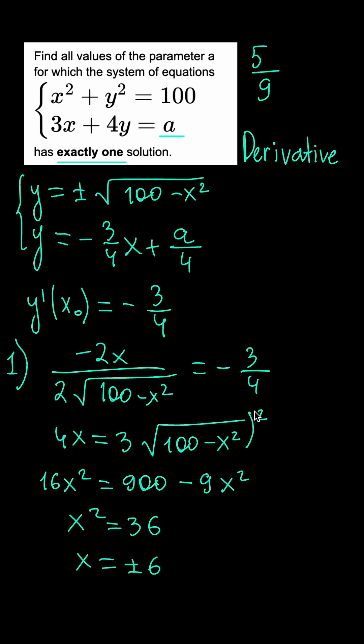But remember that we had 4x equals 3 squared roots, which means that minus 6 cannot be the root of this equation because the left hand side would be negative and the right hand side is always positive. So we have x equals 6.